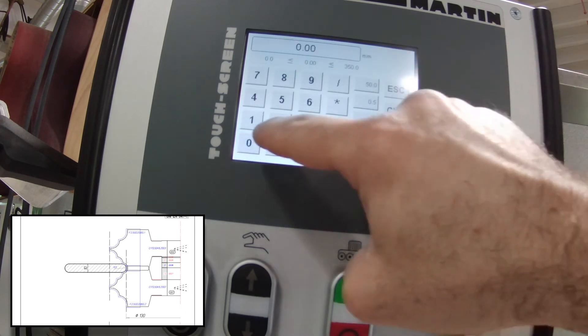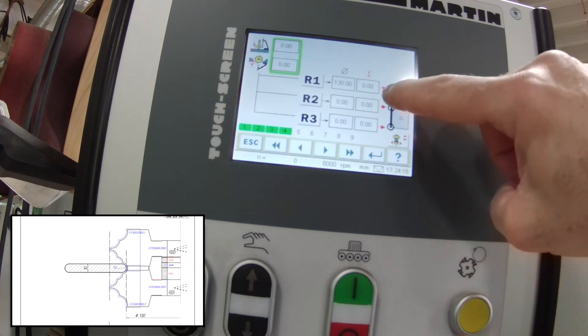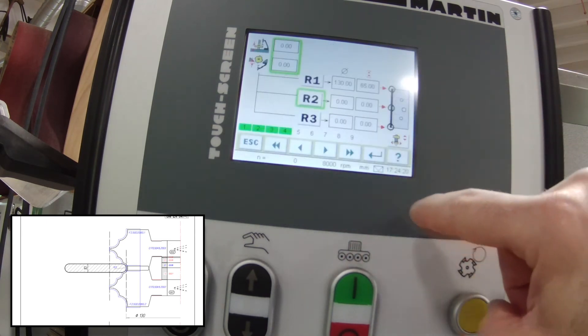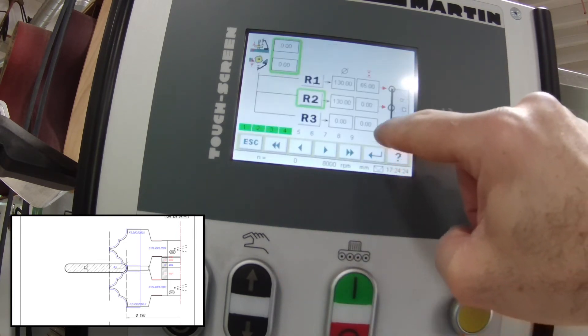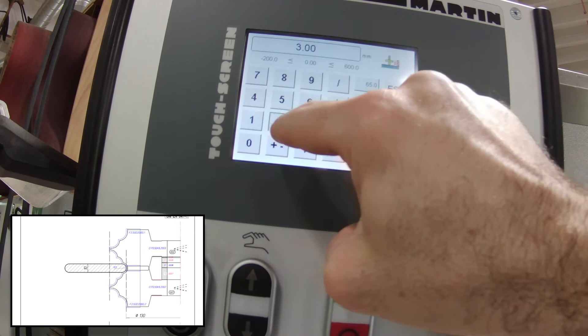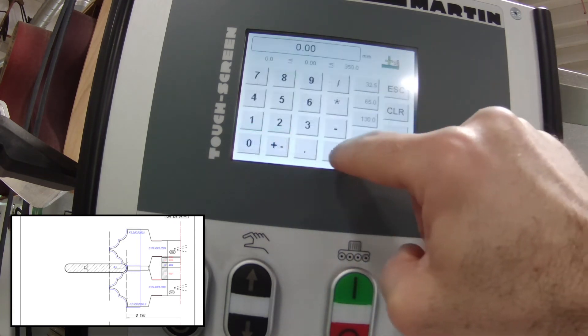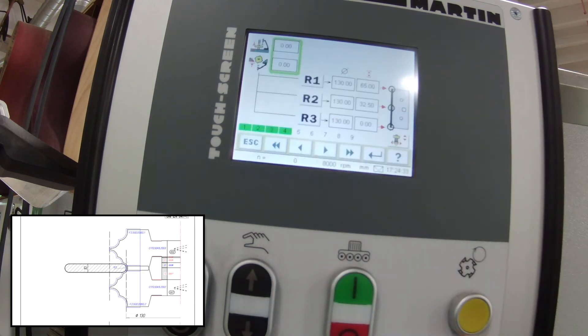Now comes the meat and potatoes of the setup. Here we're going to define the radius at the three various points: the top, the middle, and the bottom of the cutter. The radius is the same at 130 millimeters, as you can see in the diagram. The top of the cutter we've determined is at 65 millimeters. That would be two times 19 millimeters for the two cutters themselves and 27 millimeters of spacers.